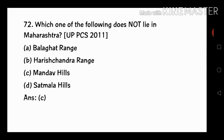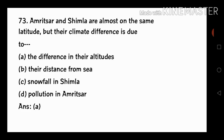Next question: Amritsar and Simla are almost on the same latitude, but their climate difference is due to — A: difference in their altitudes, B: their distance from sea, C: snowfall in Simla, D: pollution in Amritsar.